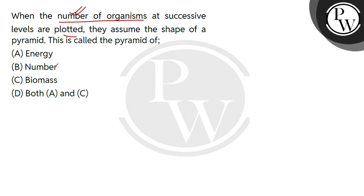Here we are counting the numbers, we are giving them a value. So energy will not be the answer. Number will be - this is our right answer. Biomass will not be the answer. Both A and C will not be correct.